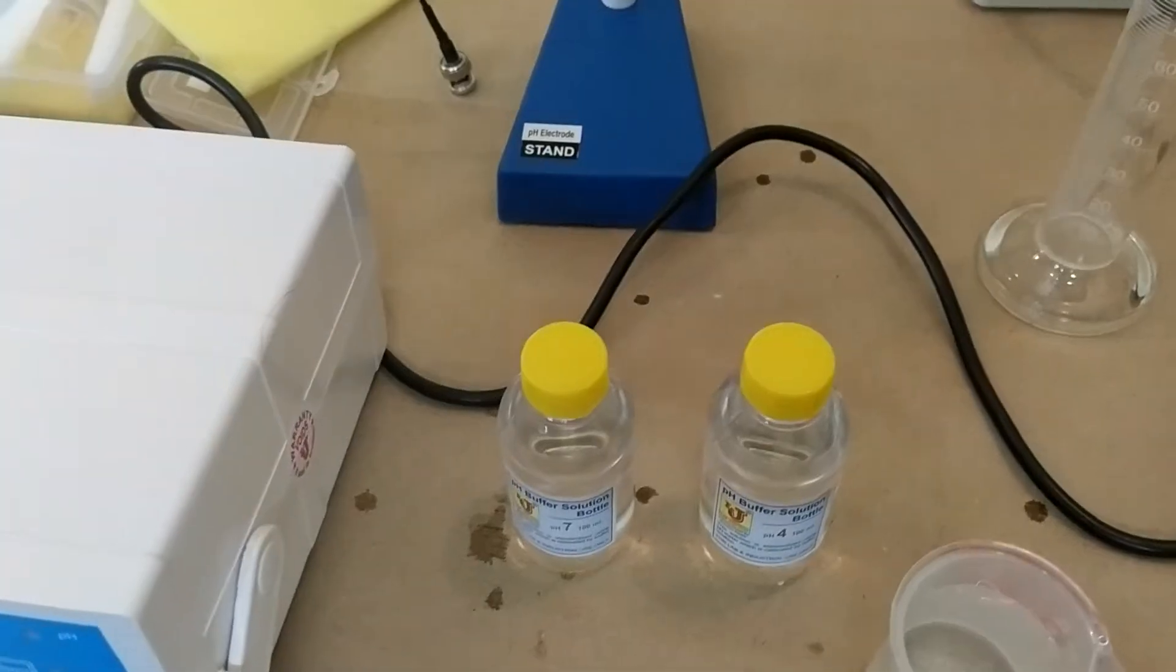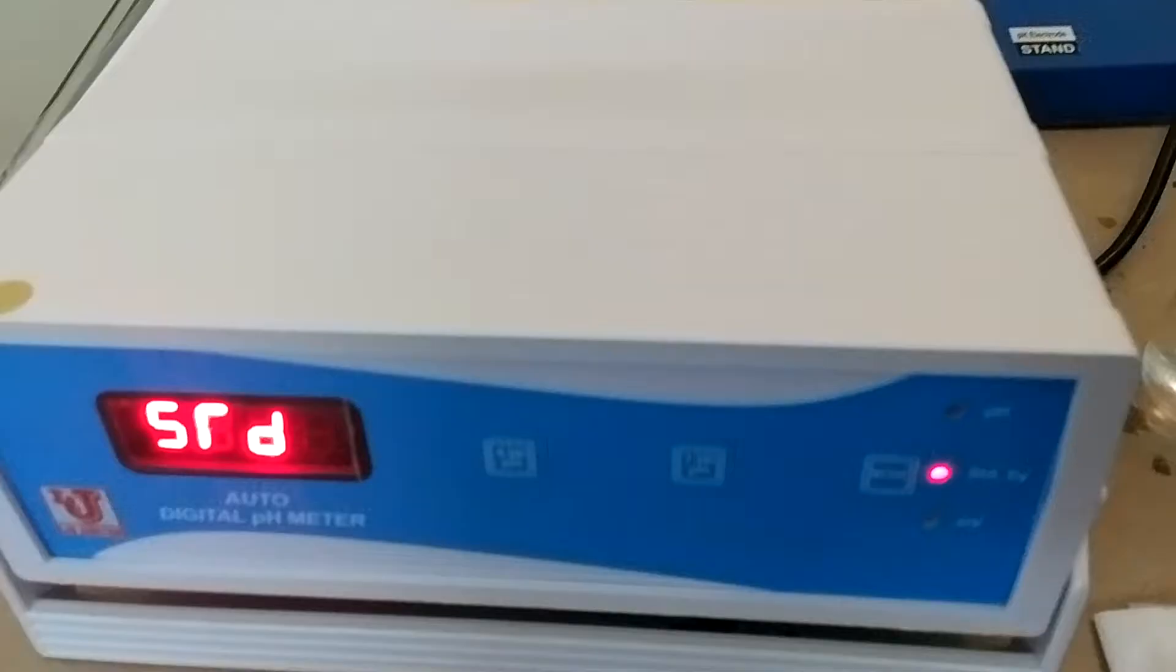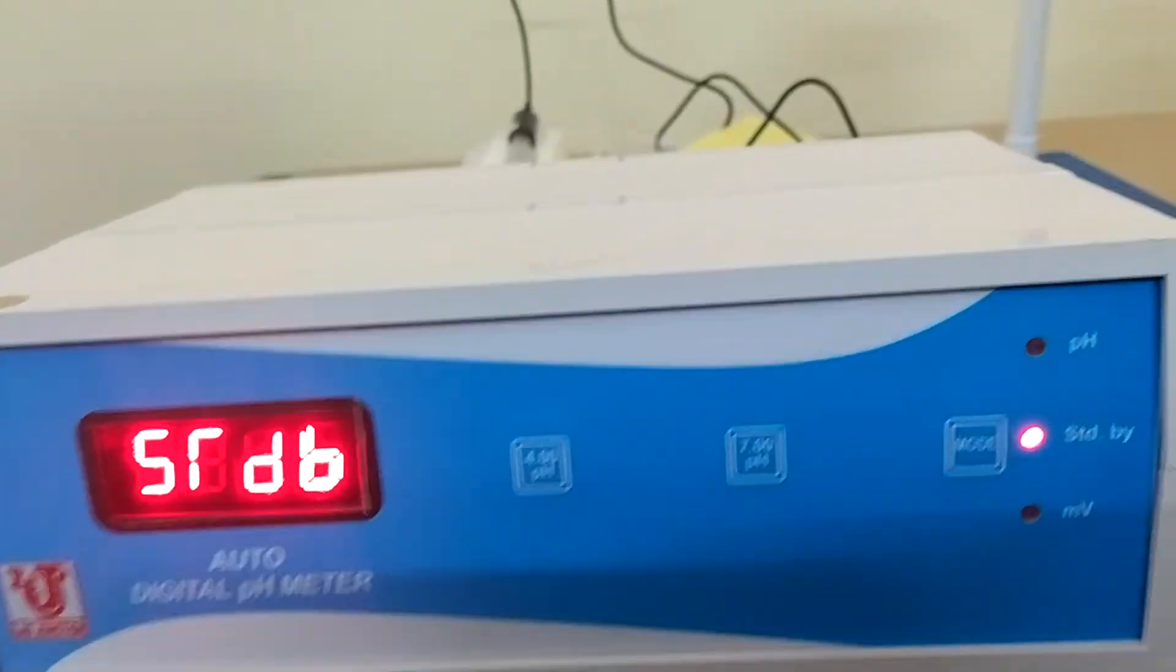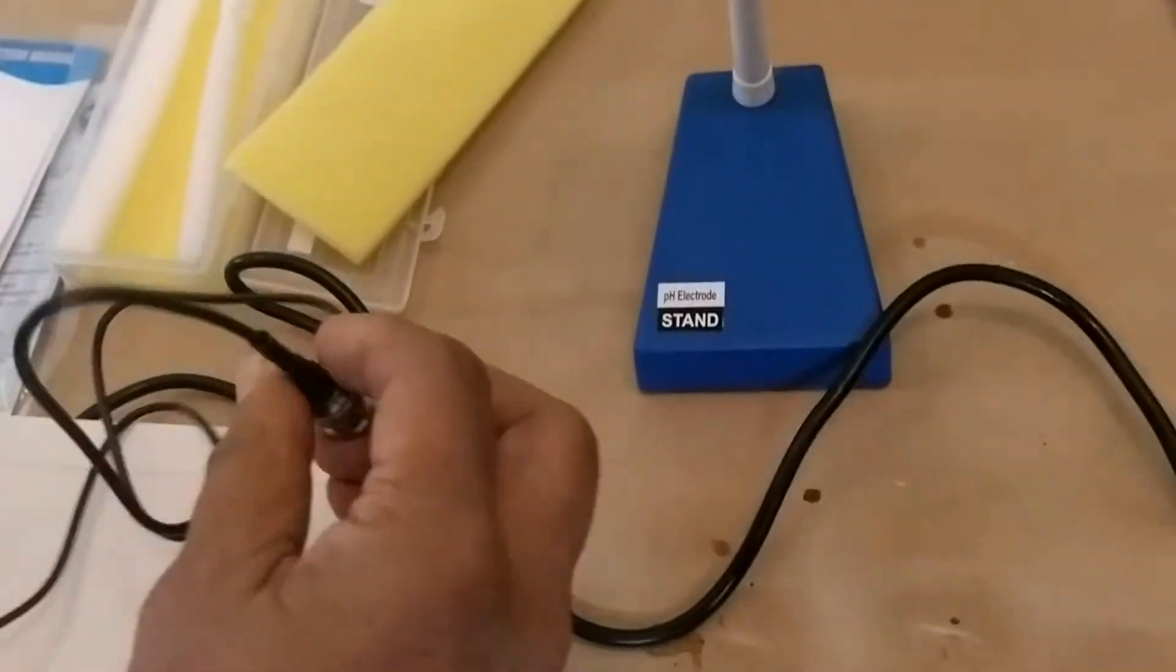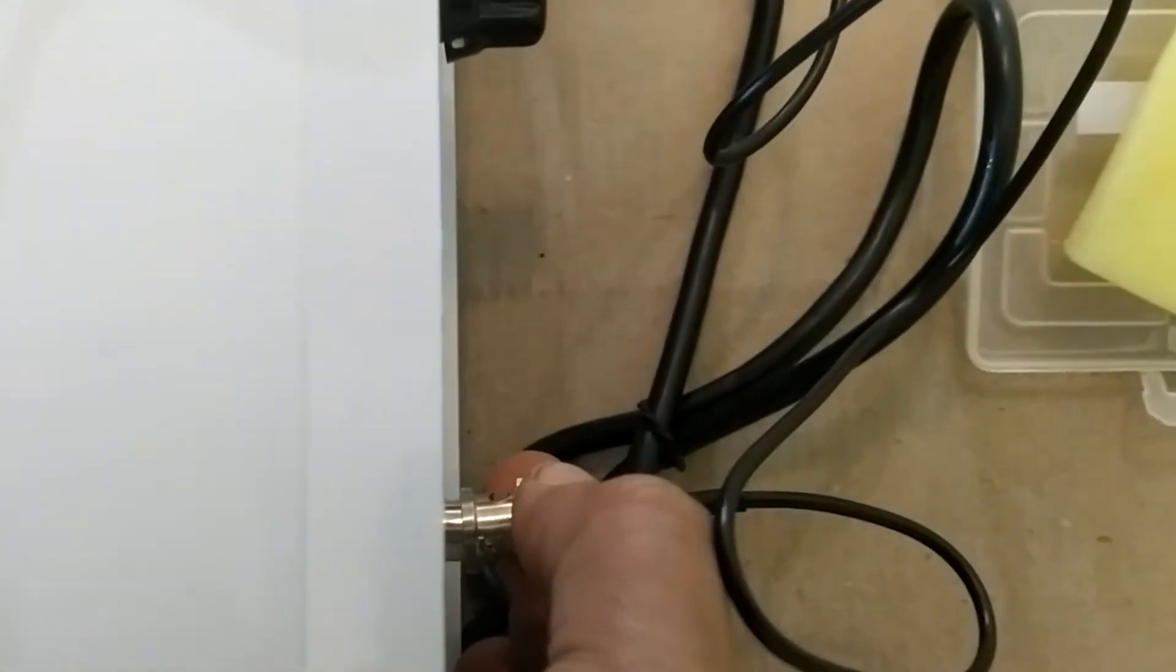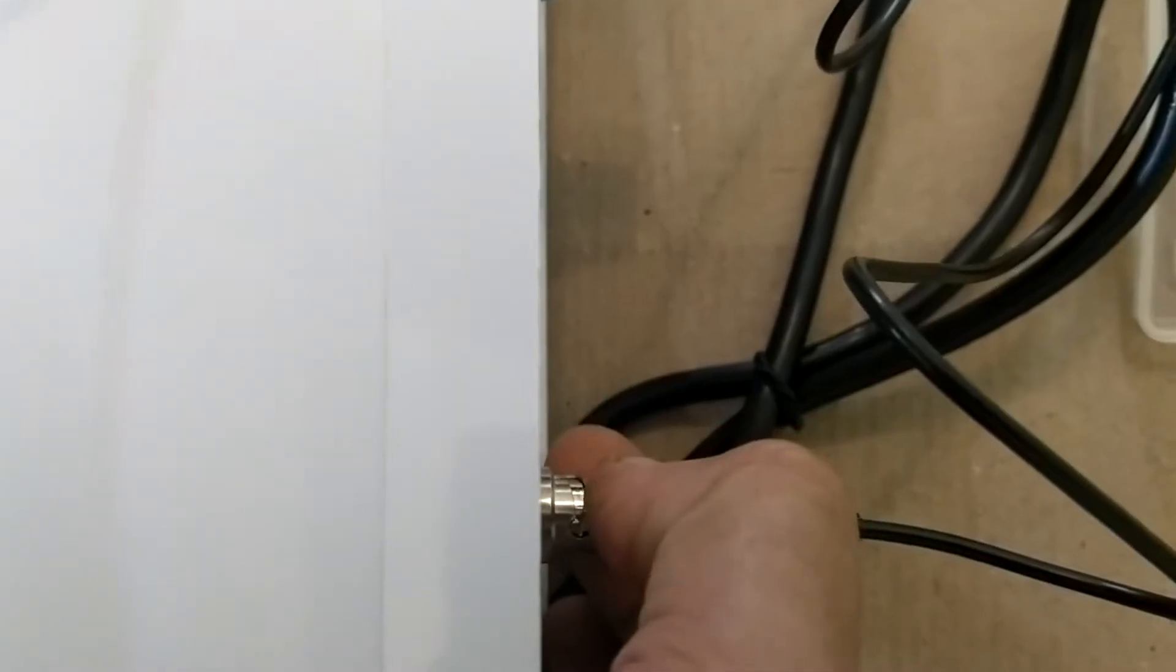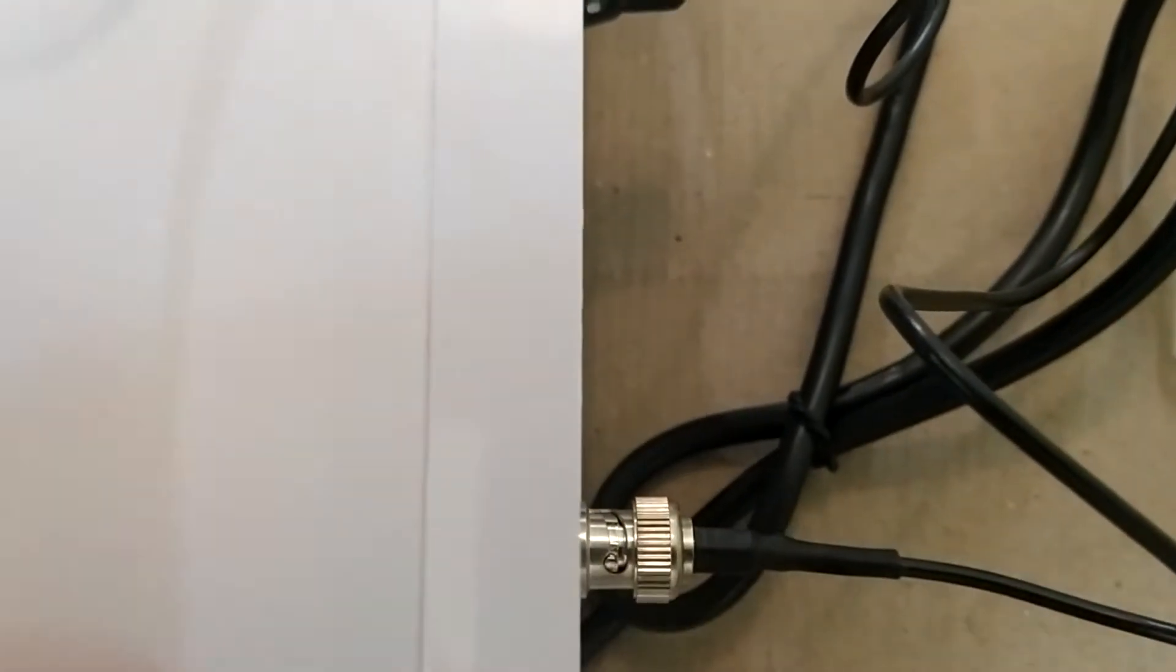Now switch on the instrument. It shows standby mode. Now take the pH electrode and connect in the back side. You can push this and twist. Then it can lock the BNC circuit.